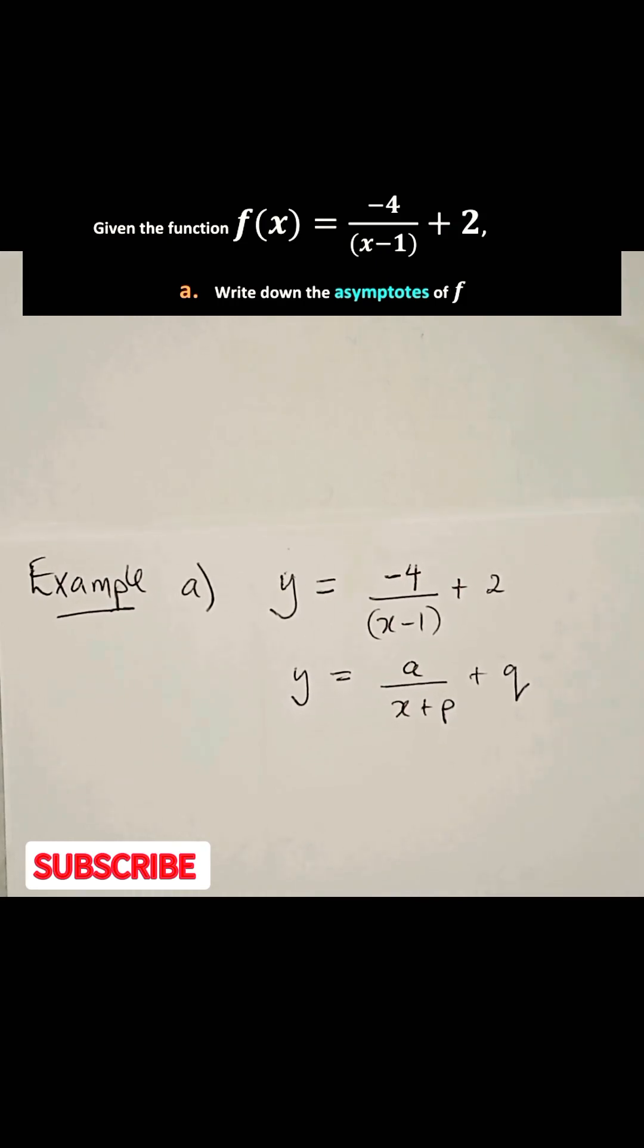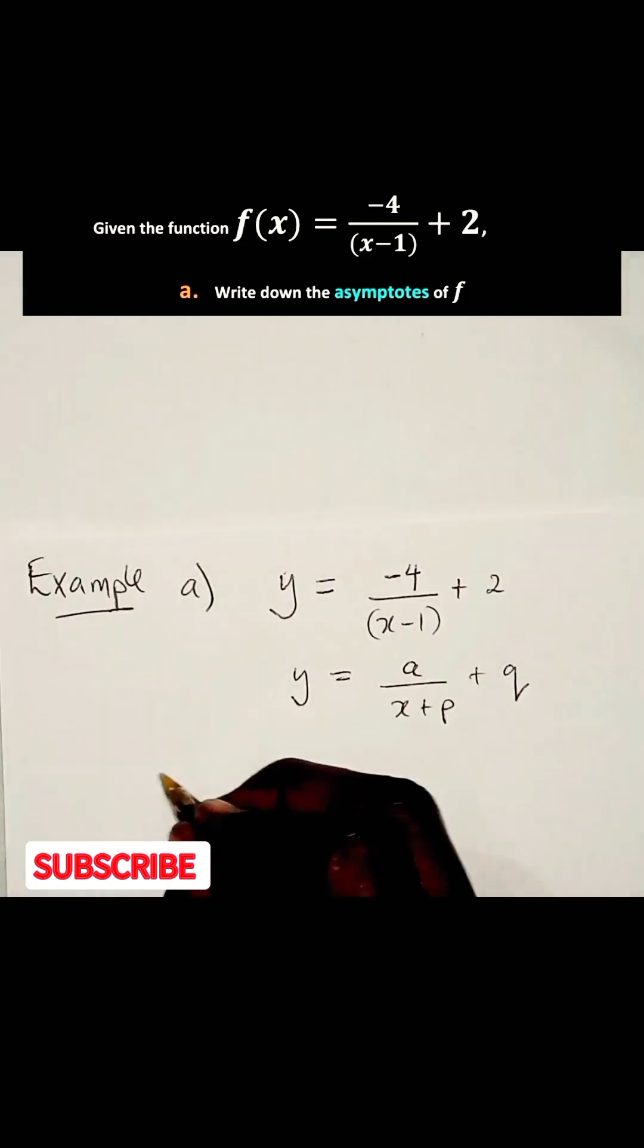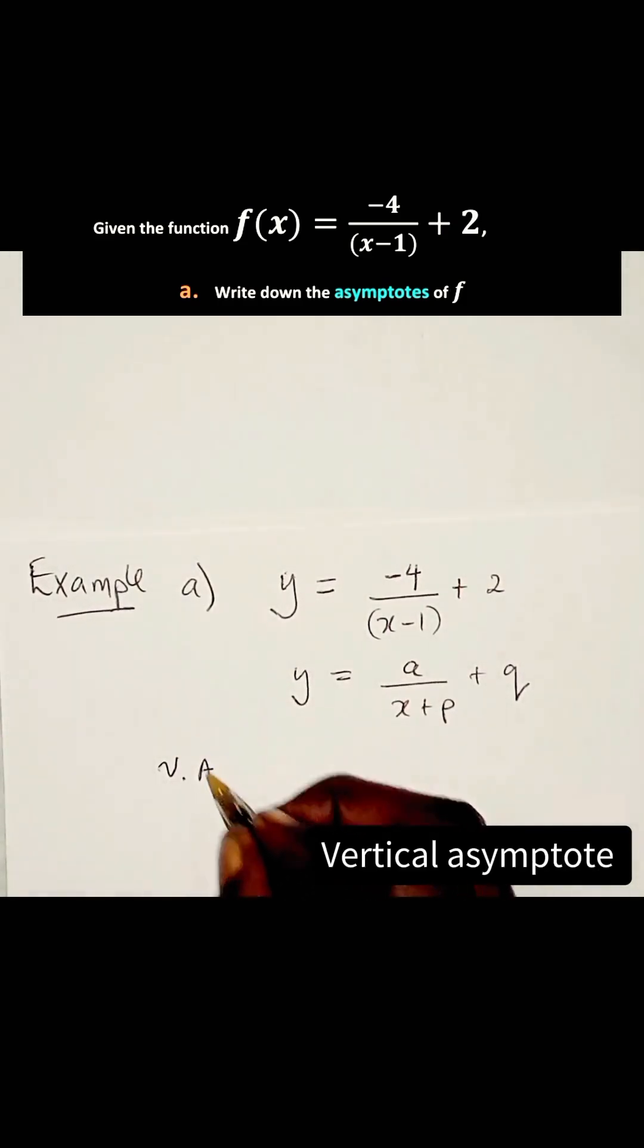Now, we need to look for the vertical asymptote. I'll just abbreviate that as VA.